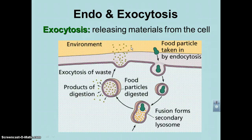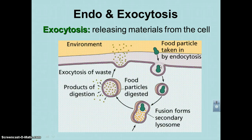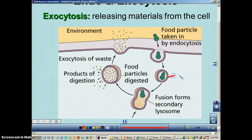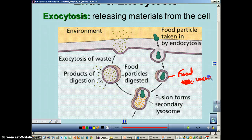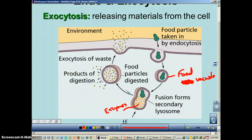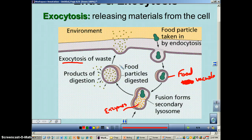Exocytosis brings materials out of the cell. In this picture, on the right side you have endocytosis and on the left side exocytosis. Here's a solid food particle being wrapped around by the cell membrane, forming a food vacuole. Then the lysosome arrives with digestive enzymes — those yellow things — which break down the green food particle. The nutrients the cell needs leave the vacuole, and the waste products move out through exocytosis, delivered outside the cell and gotten rid of. So exocytosis is the way the cell gets rid of waste particles.